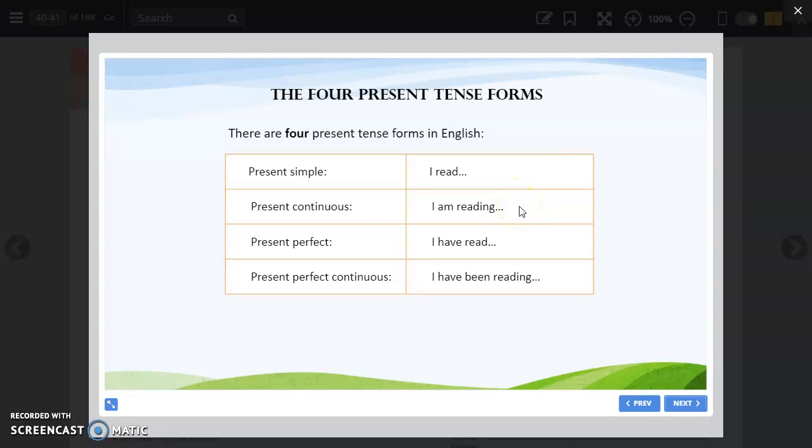So first understand present continuous, what it is. You are sleeping, you are playing. Present perfect means you have finished that work. Don't confuse it with past tense. If you have just finished some work, that will be present perfect. Present perfect continuous is when some work started in the past and is still continuing now. That is called present perfect continuous.